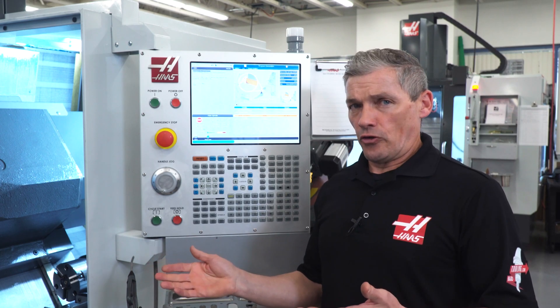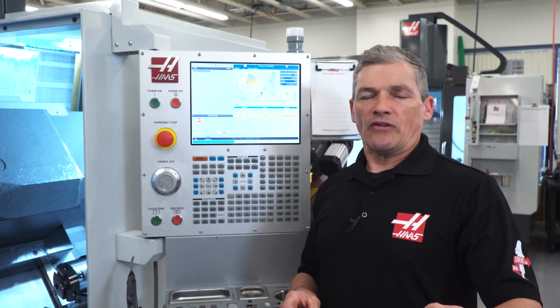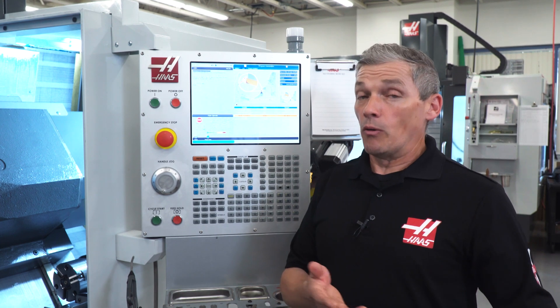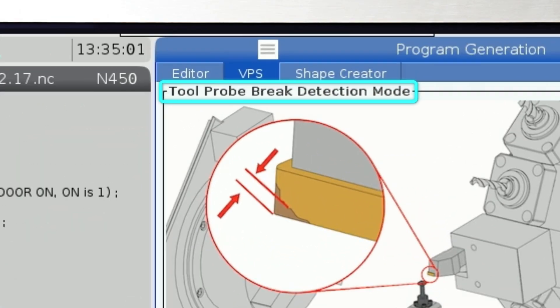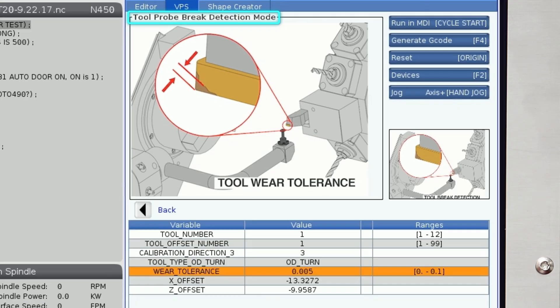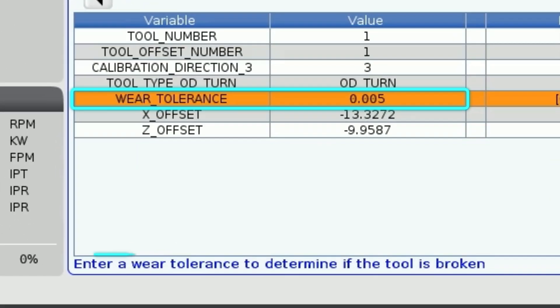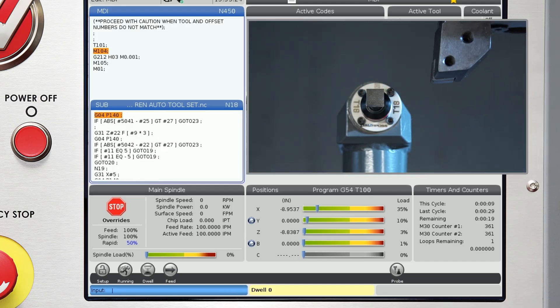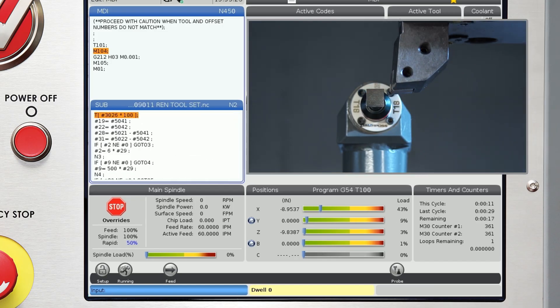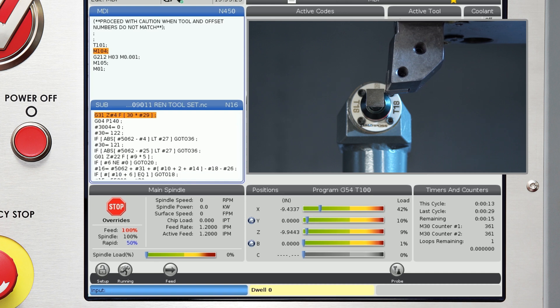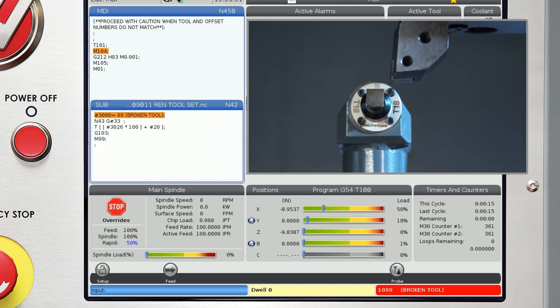Now let's take it one step further. If I want automatic offset updates, but I also want to know when my tool has too much wear, that's brake detect mode. Here I can set a limit for tool wear in the wear tolerance field. And the machine will probe and update the offset as before until it reaches this limit. And then it will alarm out letting me know that this tool is outside its acceptable range.